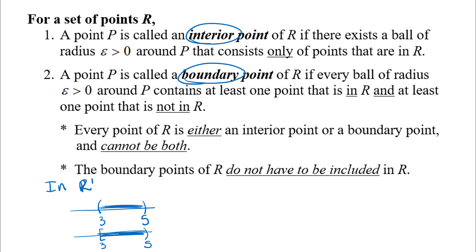When you think about interior points, you're thinking about all the points inside the region. Every single point in there would be an interior point for both of these intervals. For example, 4.89 is an interior point for both regions. Pi would be an interior point — it's a little bit bigger than 3. And 4 would be another interior point for both regions.